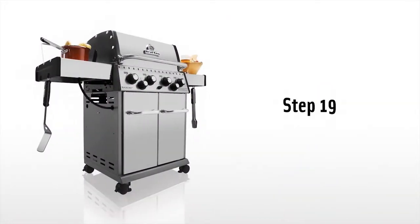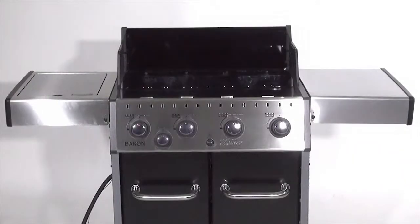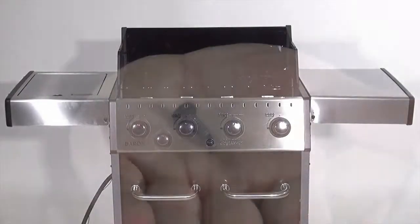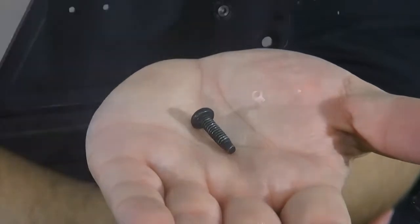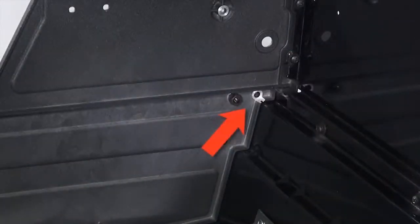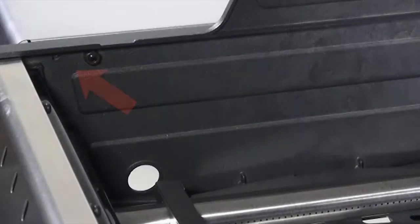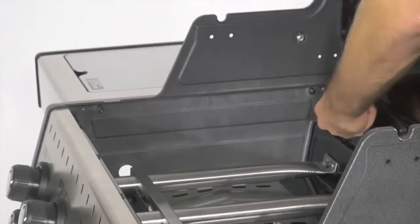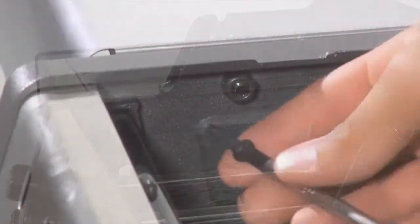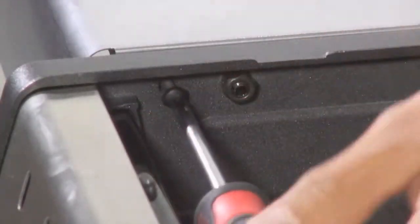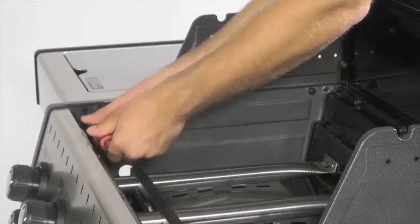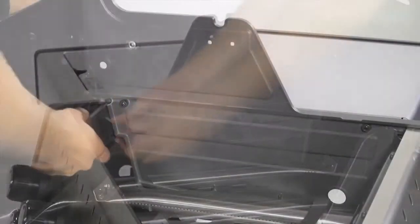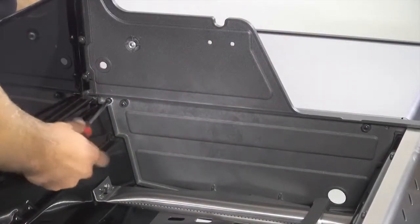Step 19. Be sure to lock the side burner in the upright position by installing the two screws through the cook box and into the side shelf. Install one screw at the back of the cook box and one at the front. If desired, the same may be done to the right side shelf.